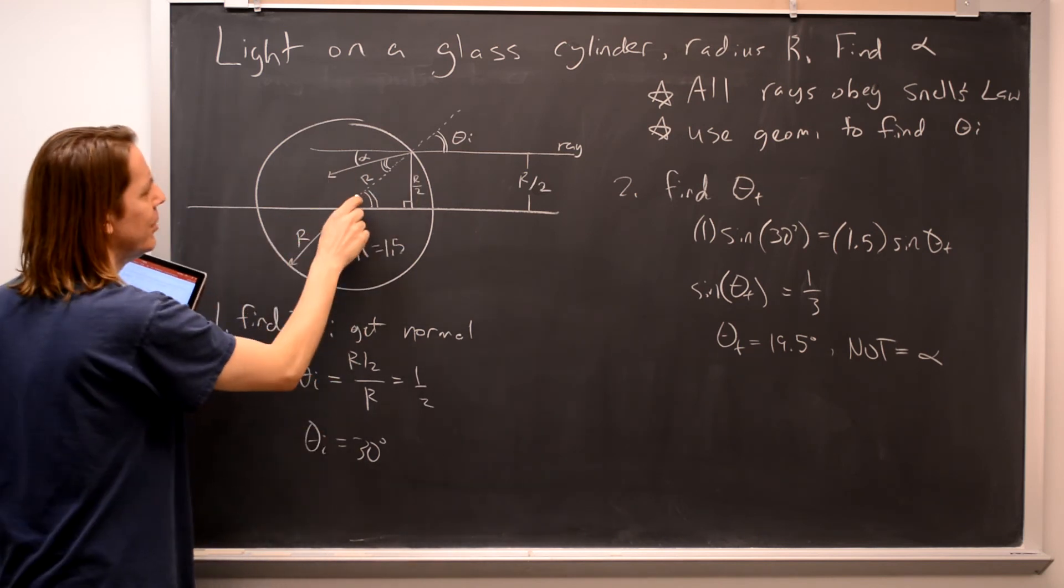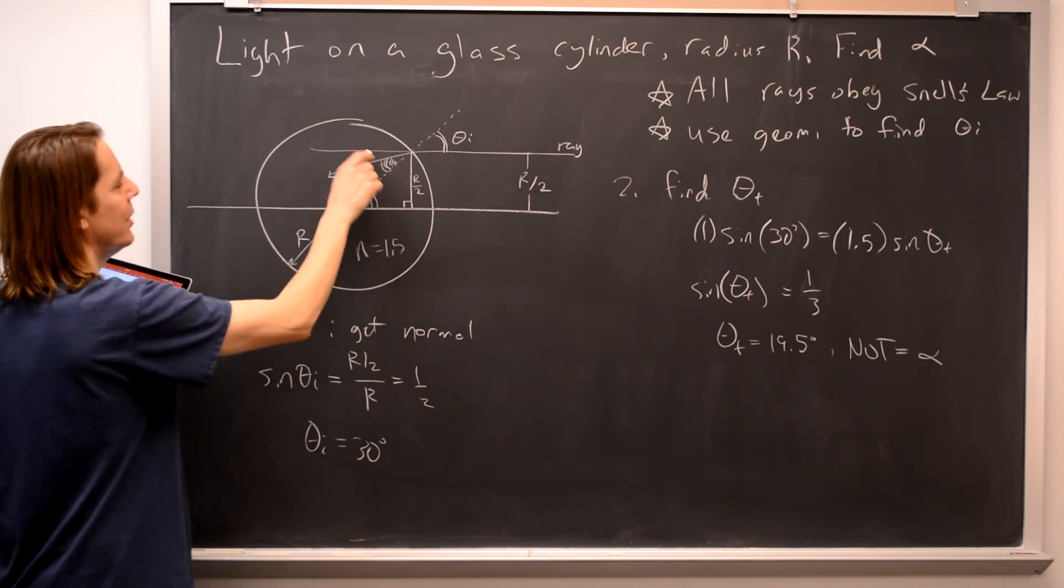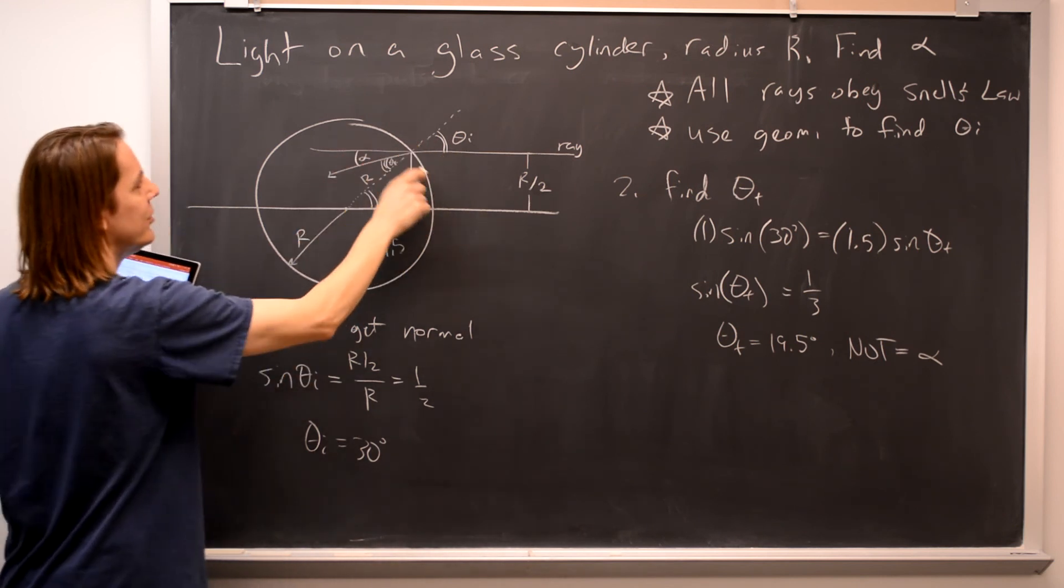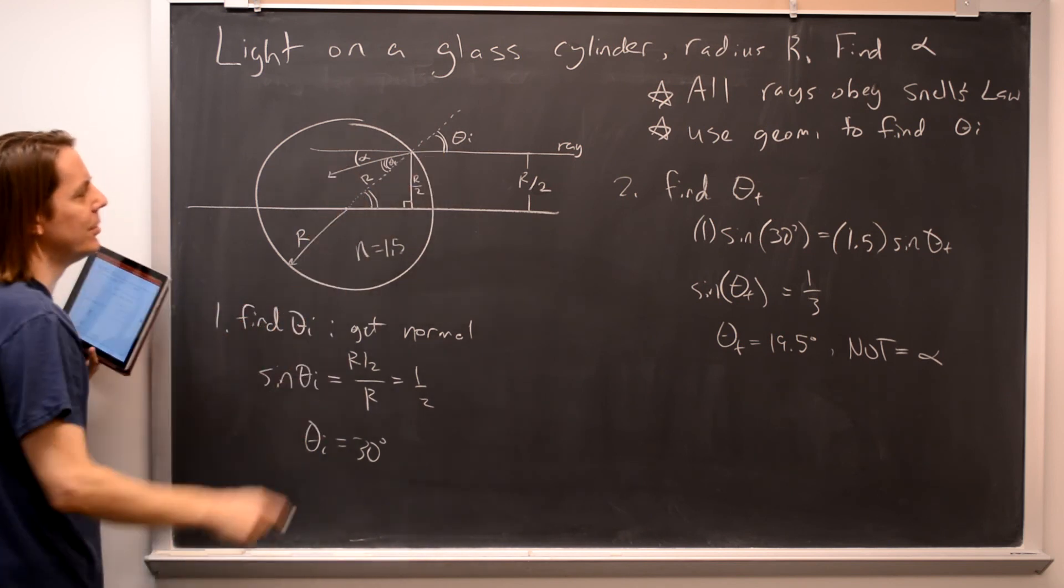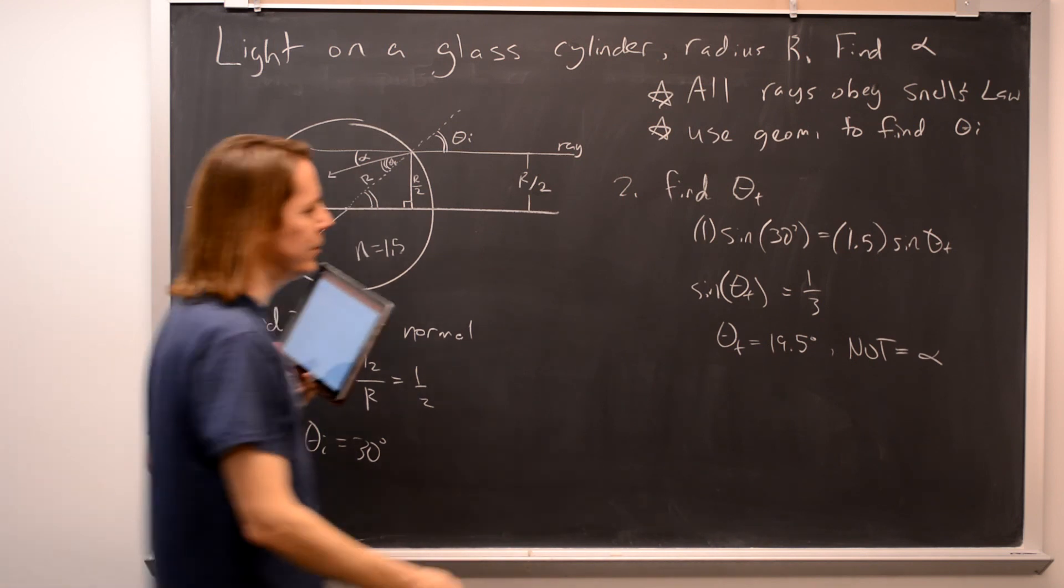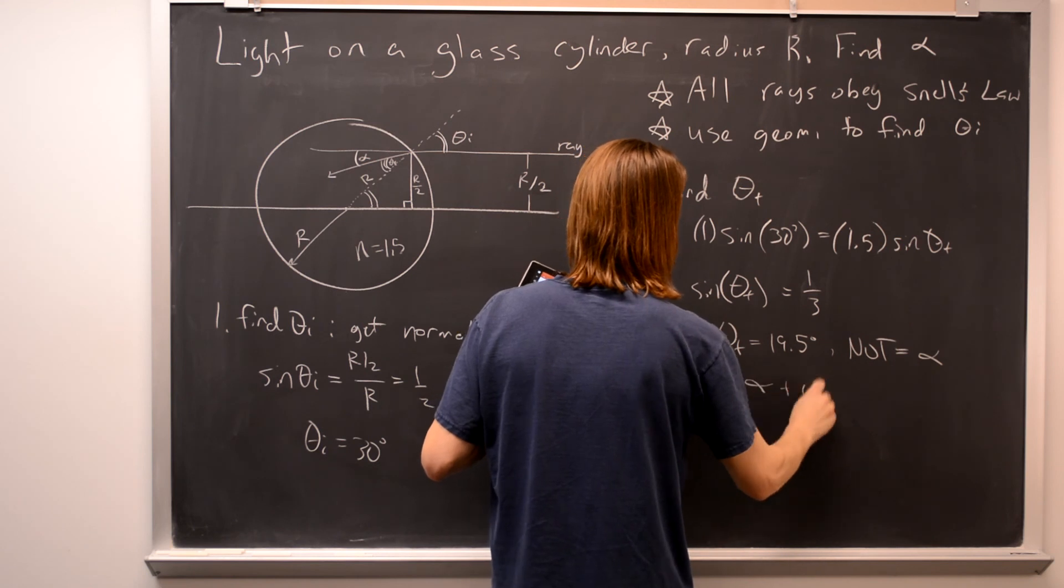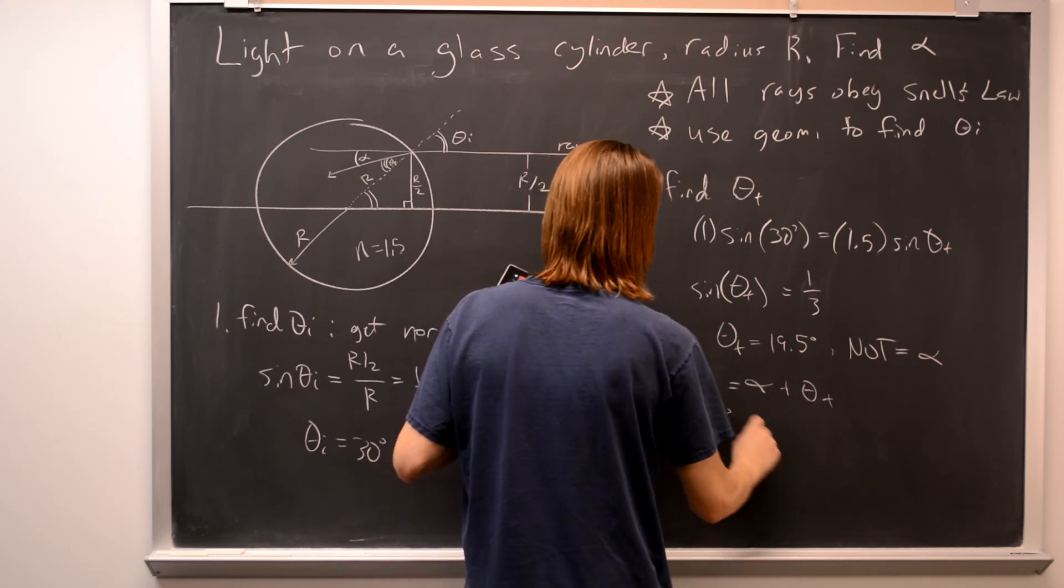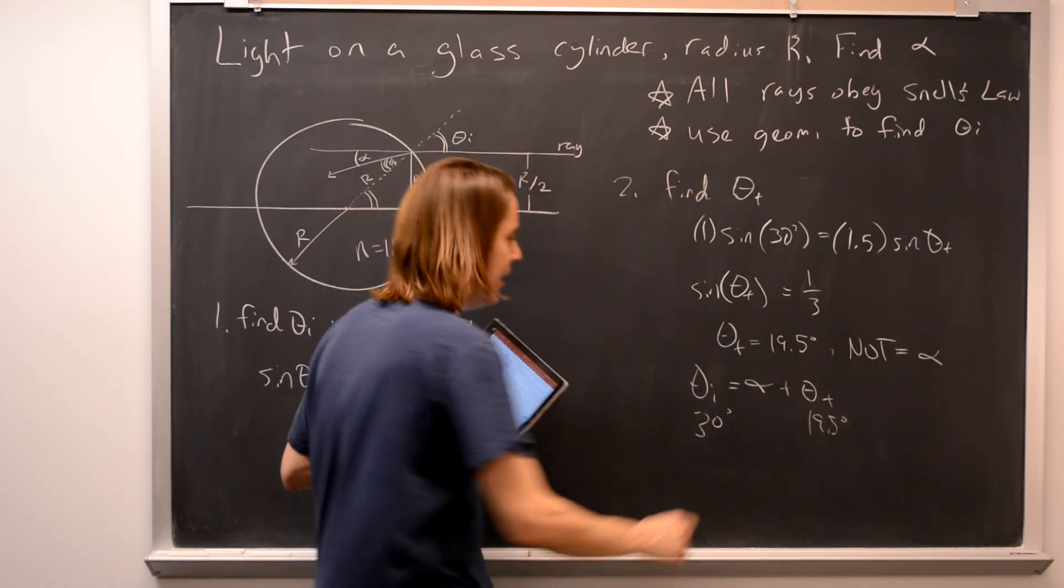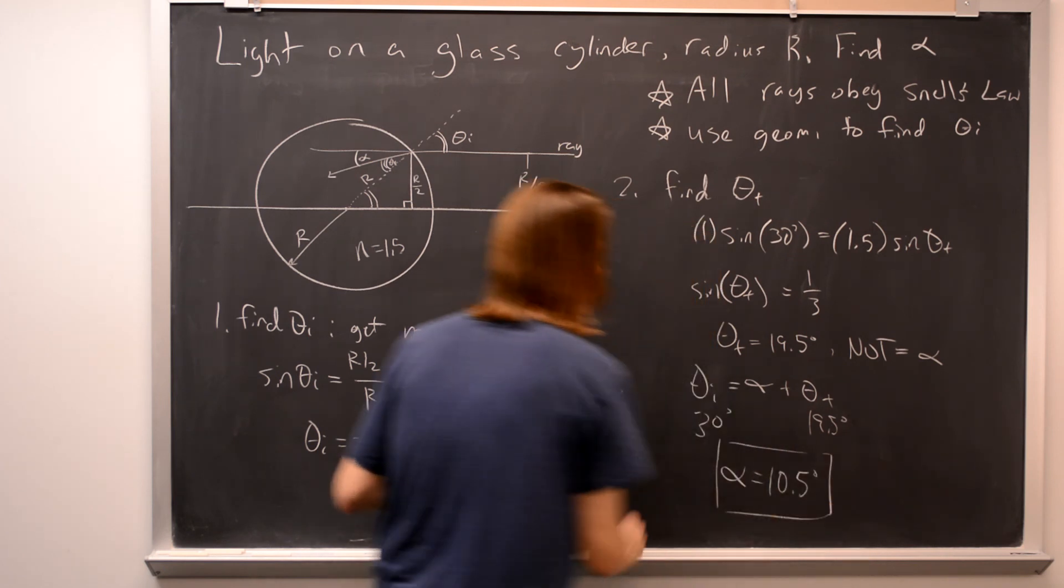So we've got to look at that and figure out what that is relative to what we know. Well, then again, geometry. You see we know theta t now, we want alpha. But what helps us is we know the sum of those two. Since this line and this line cross, theta i equals the sum. Theta i equals this angle, which is equal to alpha plus theta t. So theta i, which we know, equals alpha plus theta t, which we know. 30 degrees, 19.5 degrees. And in the end you get alpha equals 10.5 degrees, which is the right answer.